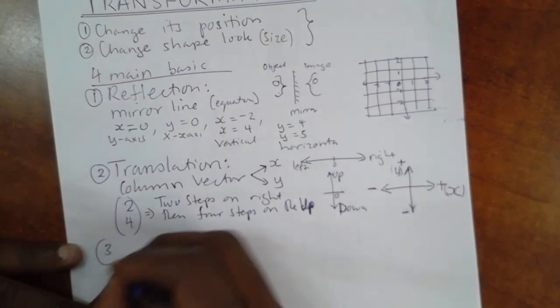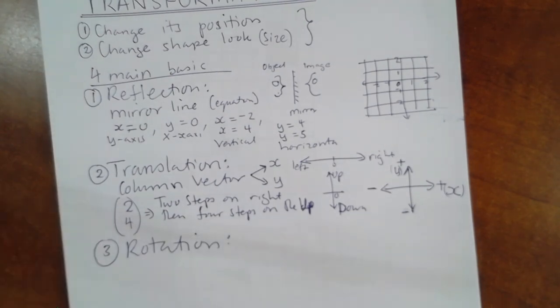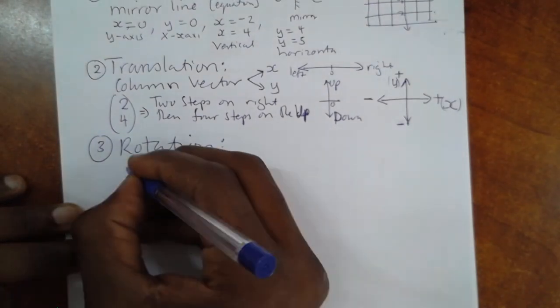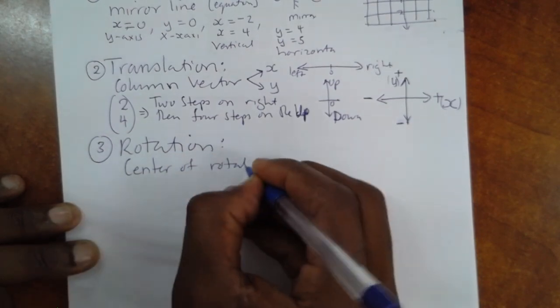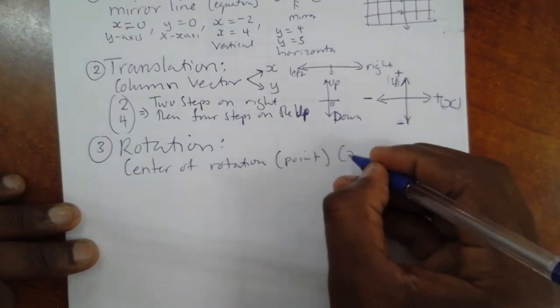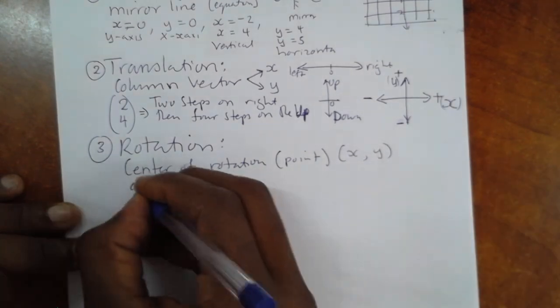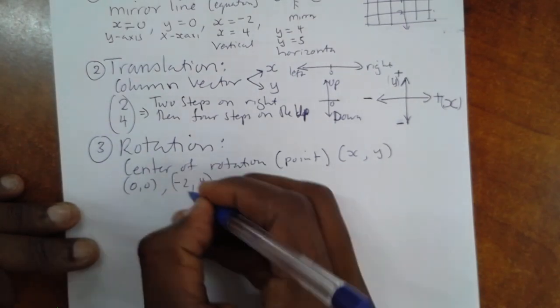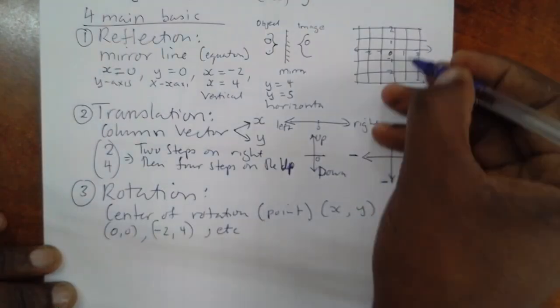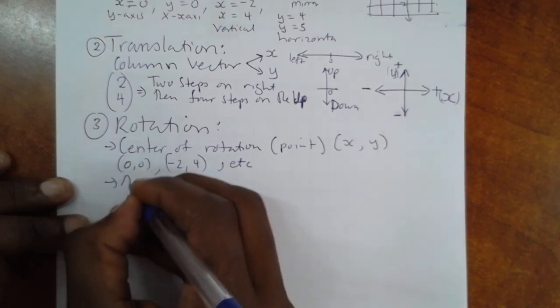Three, rotation. In order for us to carry a rotation, we need two things. We need to know the center of rotation. Remember, a center of rotation is a point. And a point is always given by the x-reading and the y-reading. It could be zero, zero. It could be negative four, negative two and four. It could be any other point, remember, on the grid, on the grid paper. So, together with the center, we need to know the angle of rotation.